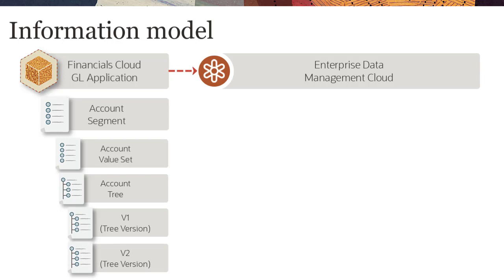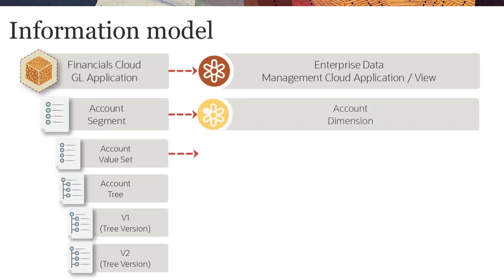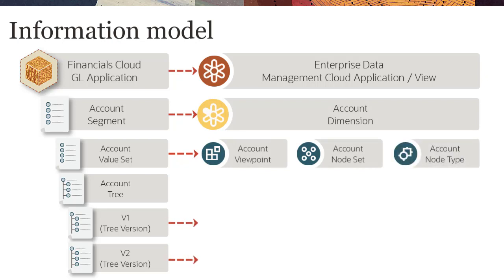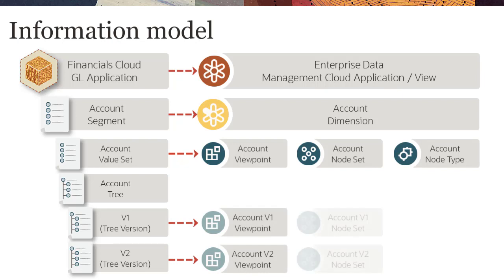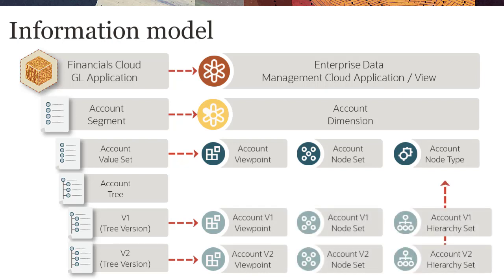When you register a Financials Cloud General Ledger application in Enterprise Data Management Cloud, the wizard creates an application and default view to represent the external application. For each segment and value set, the wizard creates a dimension, a default viewpoint, a list type node set, and a node type. For each tree and its version, the wizard creates a viewpoint, a hierarchy type node set, and a hierarchy set. The hierarchy sets use the node type for both parent and child nodes. These data chain objects not only manage the data for you, but also apply business validation rules to the data.